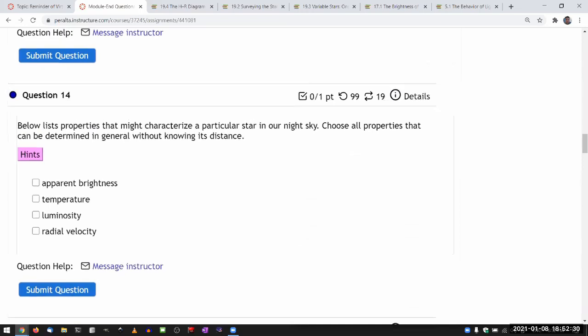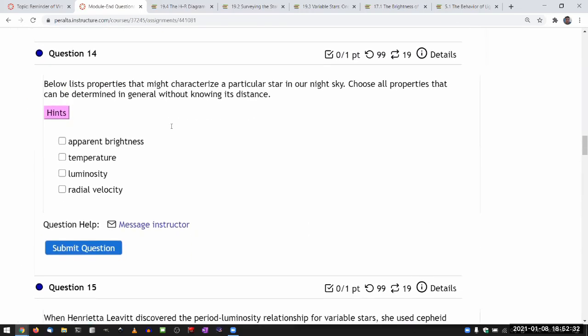Below list properties that might characterize a particular star in our night sky. Choose all properties that can be determined in general without knowing its distance. Okay, so it's definitely not going to be luminosity.